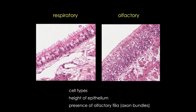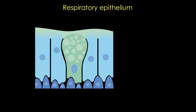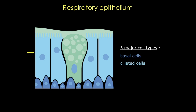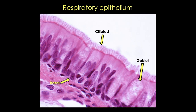Now let's start by reviewing respiratory epithelium. Here's a cartoon of respiratory epithelium. Note that there are three major types of cells in this pseudostratified ciliated columnar epithelium: basal cells, a lot of ciliated cells, and goblet cells. The easiest cell to recognize is the goblet cell, which can appear goblet shaped and even have a little bit of a stem, but the content of these cells is foamy or opaque, making them very recognizable.